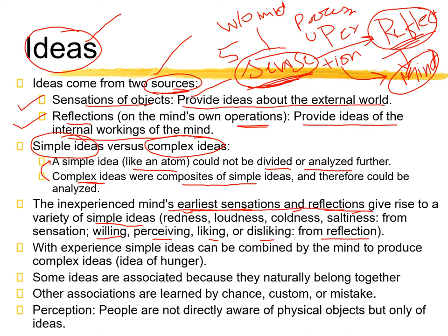Redness and loudness are simple ideas you get easily from sensation. But when your mind processes them, things like willingness and liking are not received through the senses — they are internal abilities. How you have perceived something is not given by sensation alone; sensation gives you basic information. The more complex information — the complex idea — comes through the mind's processing, which is called reflection.